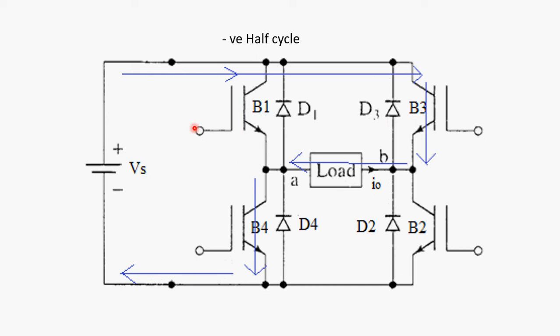In that case, what happens? Current flows from, once again, same positive plate of the battery or supply through B3 to point B and from point B to point A through load and through B4 and back to negative. In this case, you can easily see that current flows from point B to point A.